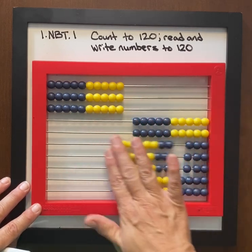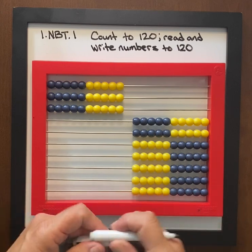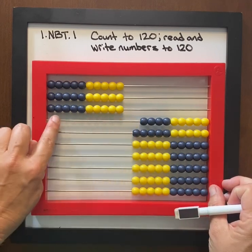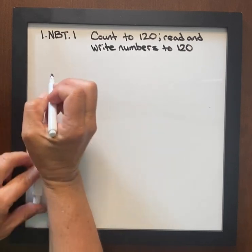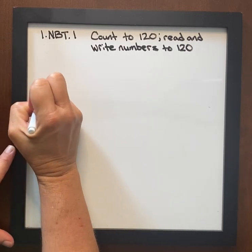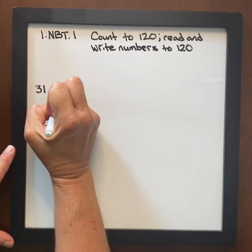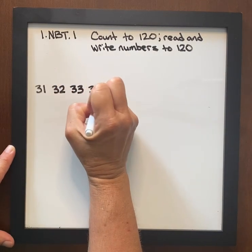And having students write this out is really helpful and using that language 3 tens 1, 3 tens 2. So let's go ahead and have students write it 3 tens 1 and say it out loud 3 tens 2, 3 tens 3, 3 tens 4.